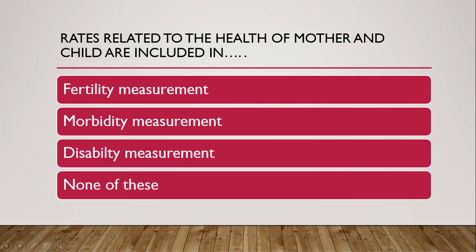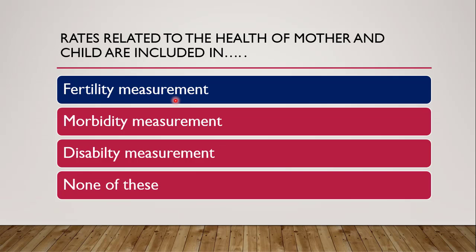The first question from Part 2: rates related to the health of mother and child are included in what? The options are fertility measurement, morbidity measurement, disability measurement, or none of these. The correct answer is fertility measurement, because fertility measurements are the rates which include all the rates related to the health of a child and mother.